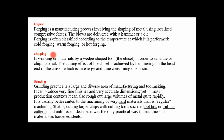Chipping involves working on material with a wedge-shaped tool called a chisel in order to separate or chip material from the base raw material. The cutting effect of the chisel is achieved by hammering on the head end of the chisel, which is an energy and time-consuming operation. Again, mechanical and physical hazards are present in this activity.